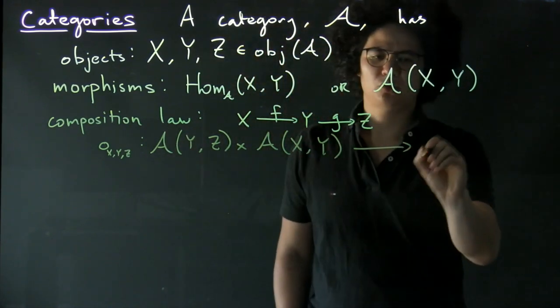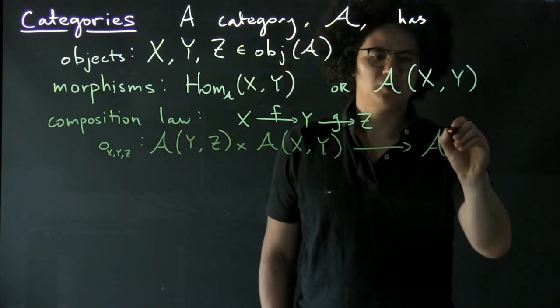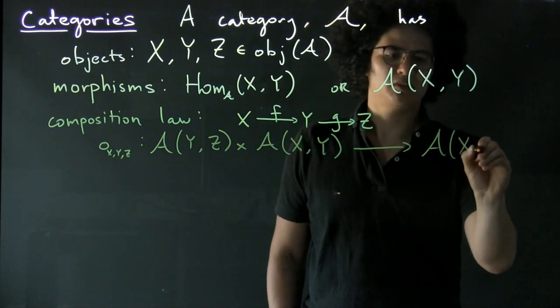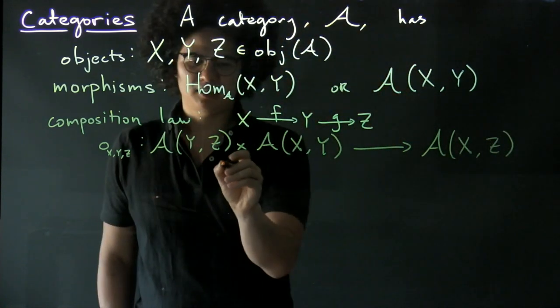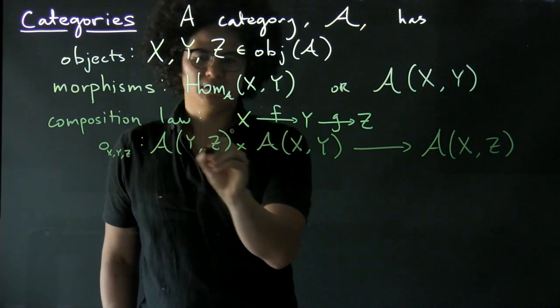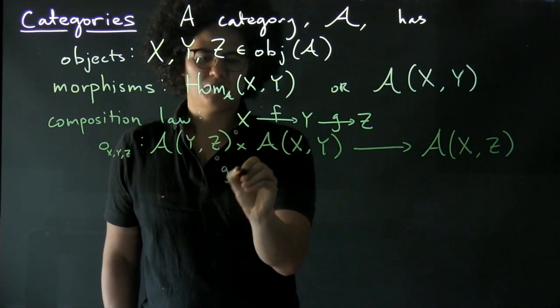It takes that to the set of morphisms from X to Z, and it does it by taking say G here. So we have a pair G, F,